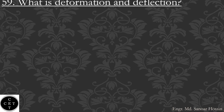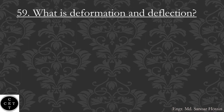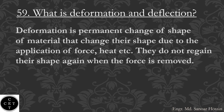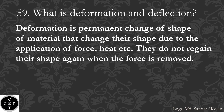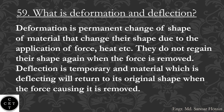Question number 59: What is deformation and deflection? Deformation is a permanent change of shape of a material that changes its shape due to the application of force, heat, etc., and does not regain its shape when the force is removed. Deflection is temporary, and the material which is deflecting will return to its original shape when the force causing it is removed.